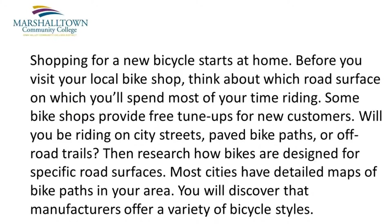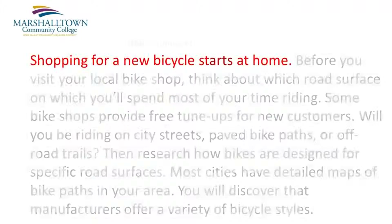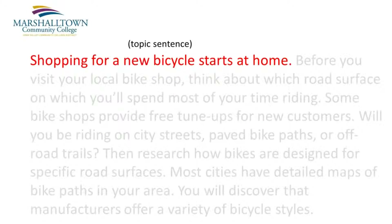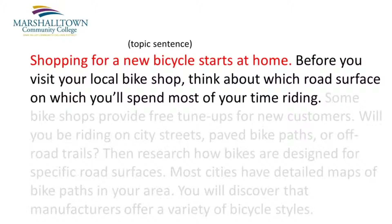Here's an example of a first draft that I wrote for this week's writing assignment. This is called a process paragraph, where I explain to a reader how to research bicycles before making a purchase. My main point, or topic sentence, is: Shopping for a new bicycle starts at home. From here, I go right into the body sentences of the paragraph. Before you visit your local bike shop, think about which road surface on which you'll spend most of your time riding. Does this sound like it's directly related to the topic sentence? I think it does.